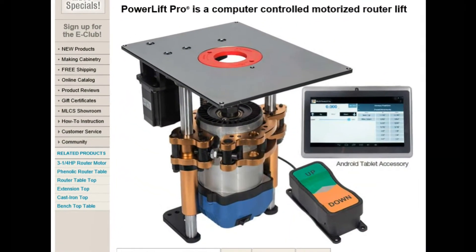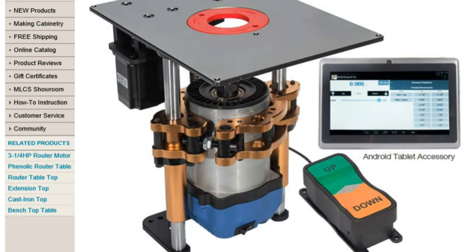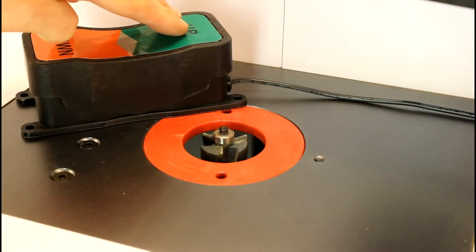The PowerLift Pro allows you to raise and lower the bit using a foot pedal. You don't need to shut off the router, and you can keep both hands on the work while changing the bit height.